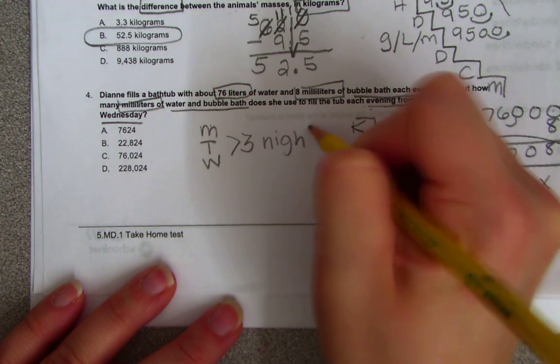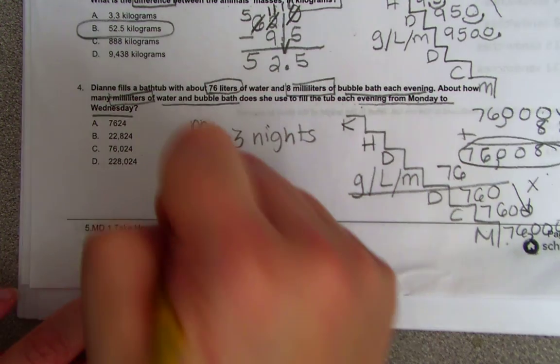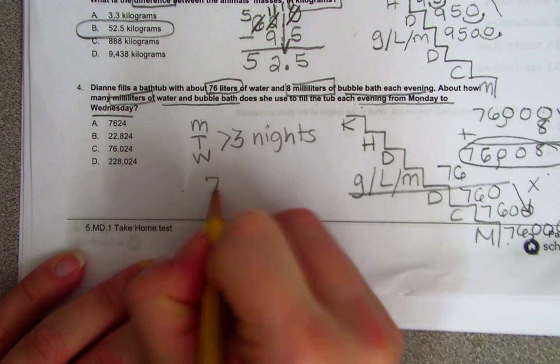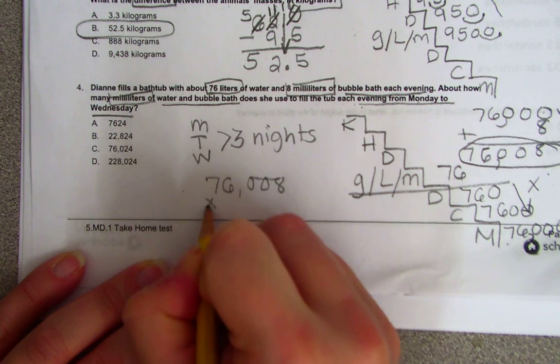So what do you think you have to do with 76,008 and 3 nights? You should be telling me we're going to multiply. Okay, so we're going to take 76,008 times 3.